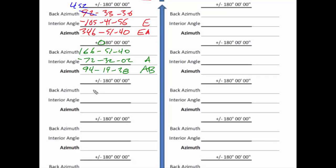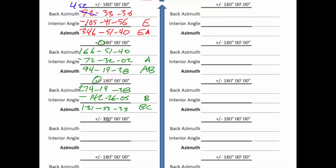Since the azimuth is less than 180, I add 180 to get the back azimuth: 274 19 38. That is the back azimuth of AB. Now I subtract the interior angle at B, which is 142 26 05, to get the azimuth of BC, giving 131 53 33. BC is clearly drawn in the southeasterly direction, and our azimuth is between 90 and 180, so yes, this looks reasonable.